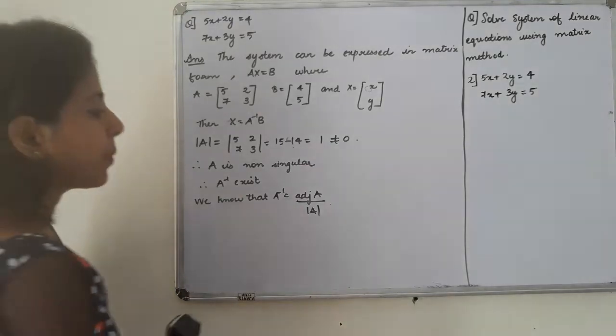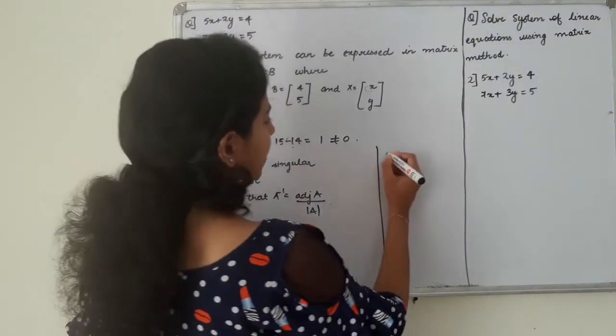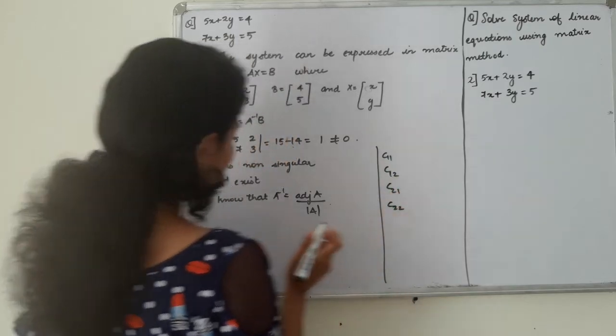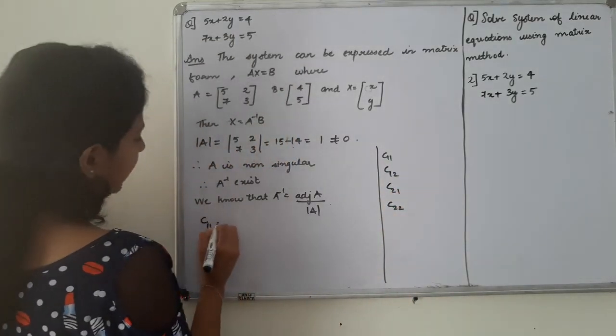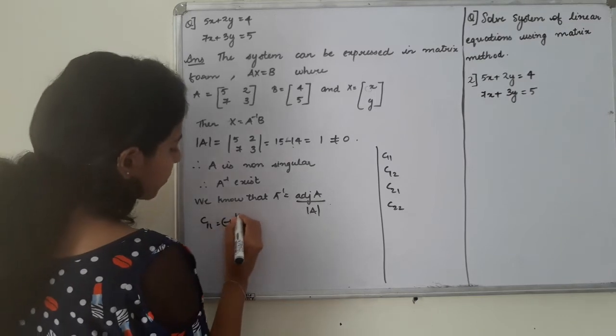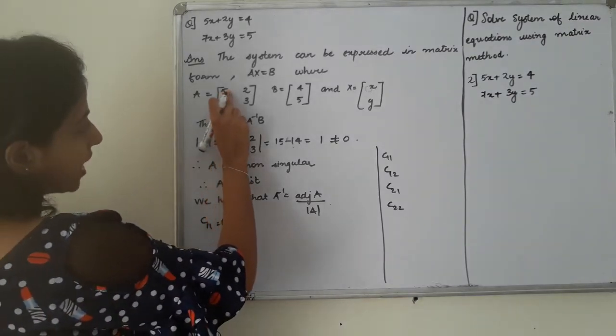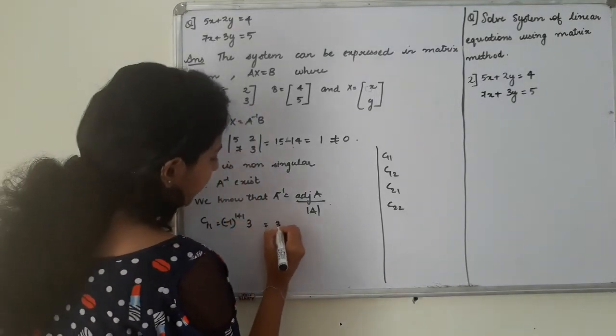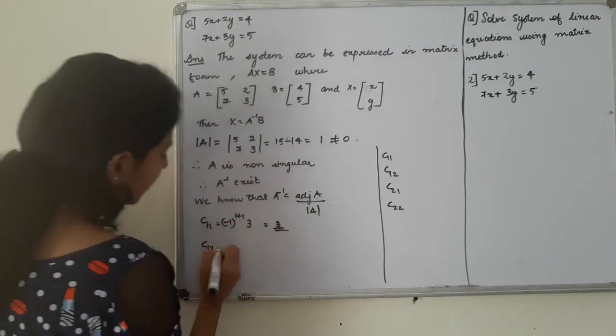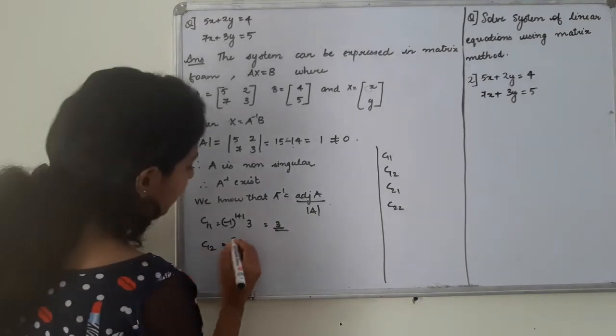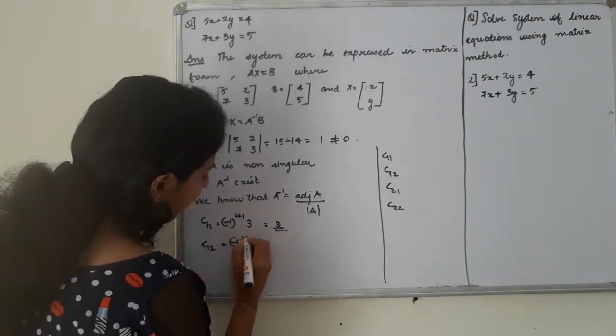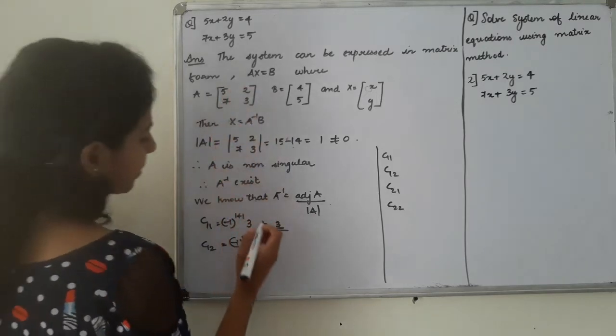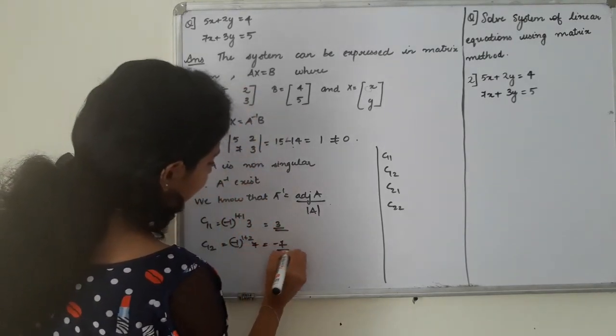Now, we will perform all positions in the co-factors. This is the co-factors. C11 is A minus 1 raise to 1 plus 1. So, it will be the co-factor C12, minus 1 raise to 1 plus 2. That is, in this position, the following column hiding will be 7. That is, minus 7.